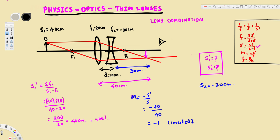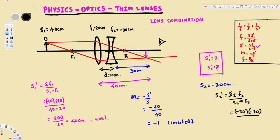To calculate the second image distance we use the same formula: s2 prime equals s2 times f2 divided by s2 minus f2. Here s2 is negative 30 and f2 is also negative 30. The denominator becomes negative 30 minus negative 30, which is negative 30 plus 30, giving us zero.